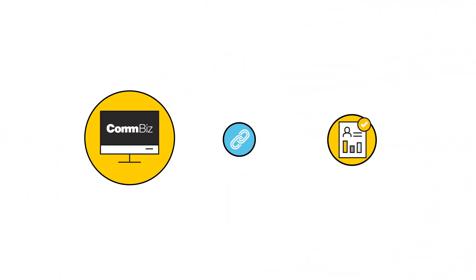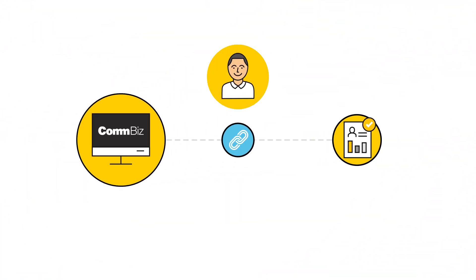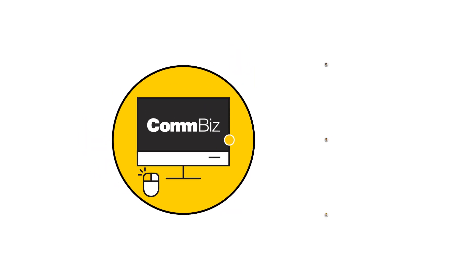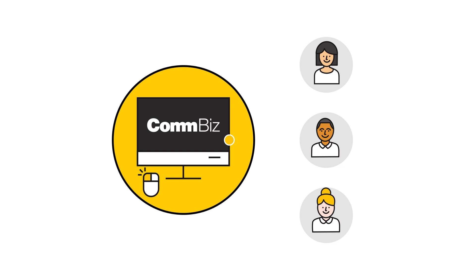This video will show you how an administrator of a ComBiz service can link an account to ComBiz and set up an electronic account authority, which defines who can authorise payments on an account.